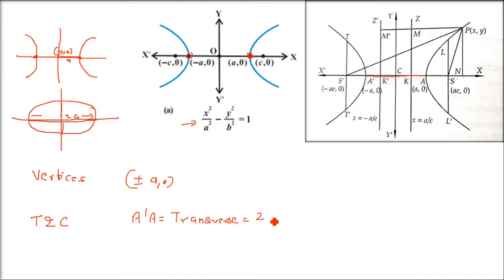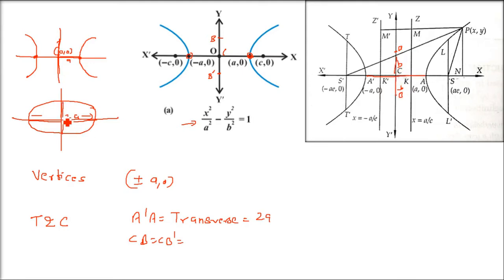The length 2a is the transverse axis. When we make a perpendicular — looking at the y-axis — we mark a point of length b and b', so CB and CB' are equal to b. Similar to the semi-minor axis in the ellipse, here we have 2b. A line perpendicular to the transverse axis is called the conjugate axis.